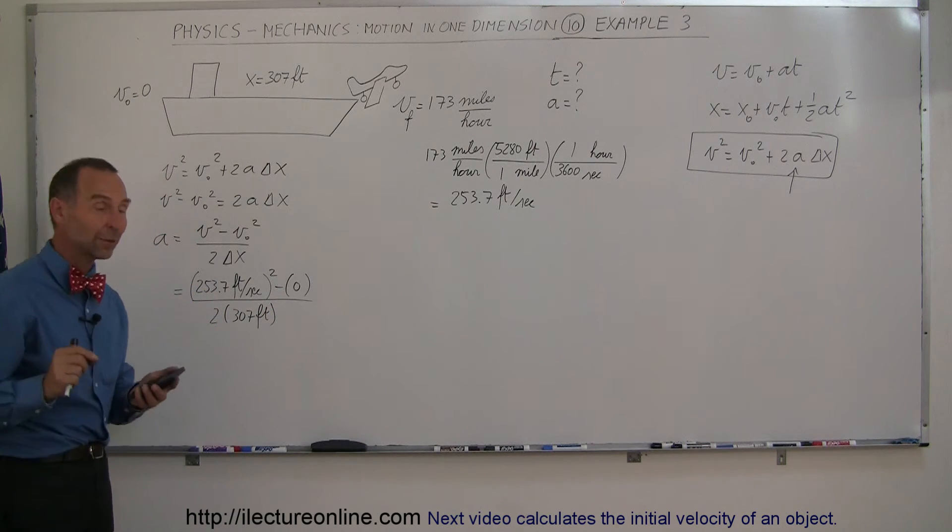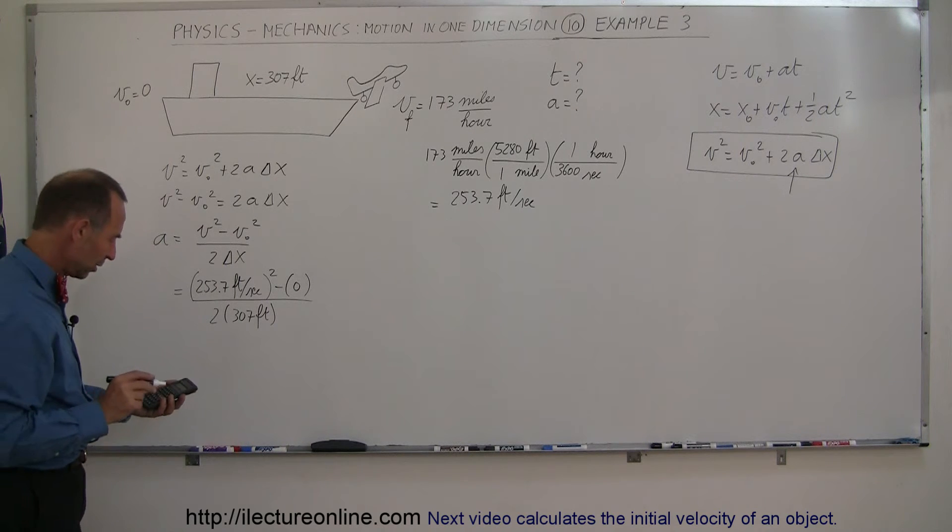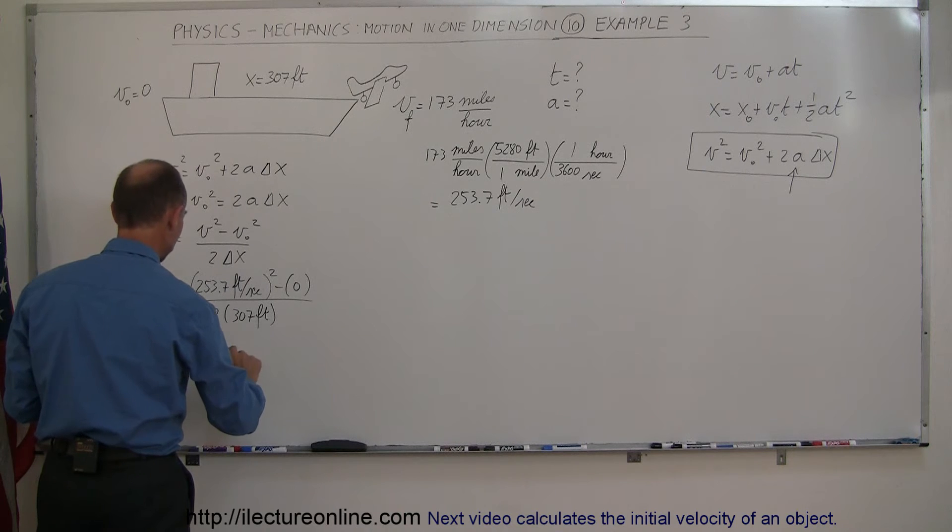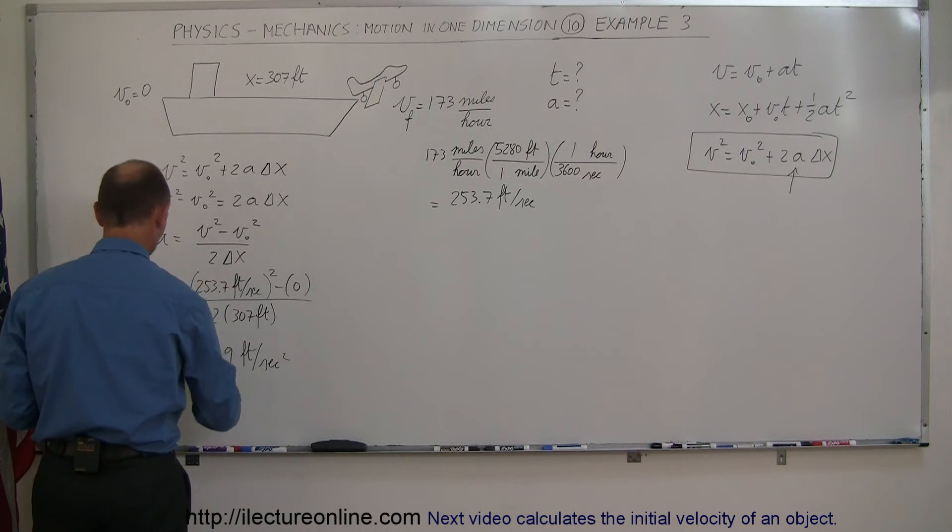Let's find out what that's equal to. So we square that amount. We divide by 2 and we divide by 307, and we get 104.9 feet per second squared. That's the acceleration.